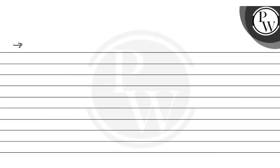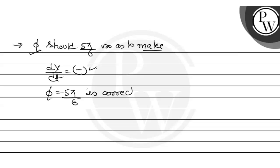So as to make dy/dt negative, phi should be 5 pi by 6. So 5 pi by 6 is the correct value of phi.